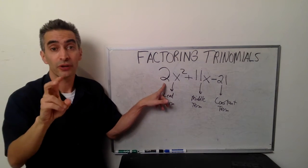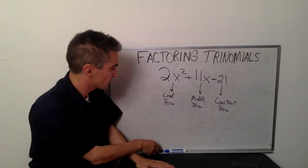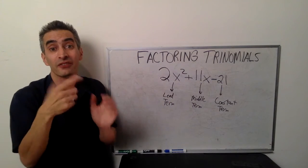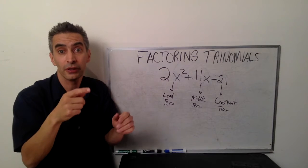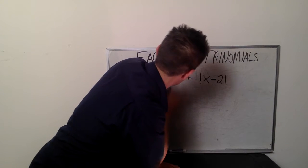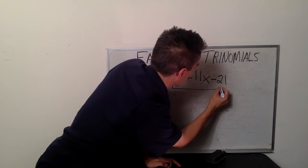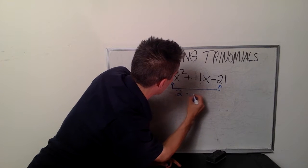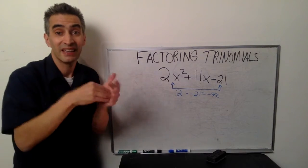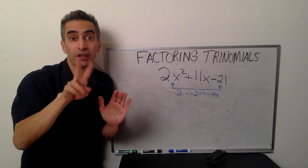Notice that the lead term is 2x squared, so there's a 2. And notice the constant on the end, negative 21. We're going to multiply those two together: 2 times negative 21 equals negative 42.